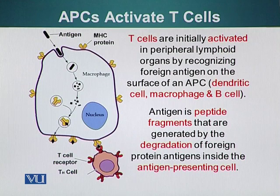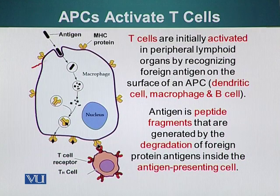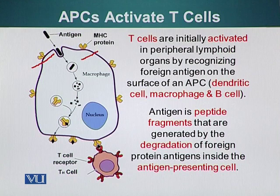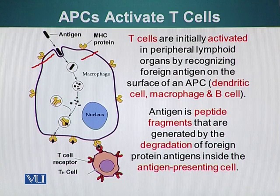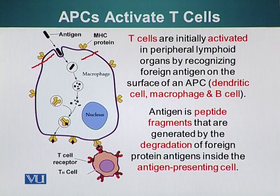These peptide fragments are presented to T cells with the help of MHC proteins. In this diagram, here's a macrophage acting as an antigen presenting cell. This macrophage has ingested a bacterium, forming a phagosome, which then fuses with the lysosome, resulting in degradation of the bacterium. Small pieces of this bacterial protein are grabbed by the MHC molecule, moved to the surface of the APC, and displayed to T cells for recognition. Here is the T cell and here is the T cell receptor shown in red.